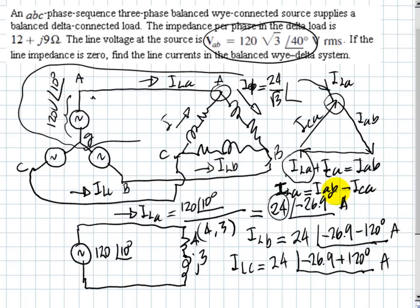Then I solve for the line current. The line current is IAB minus ICA. IAB is this, plus the negative of ICA would be this. We add them together, this one with this one, and I get the line current A, which is this one here. But I already know this one. This is ILA. I know that, that is 24 amps with negative 26.9.